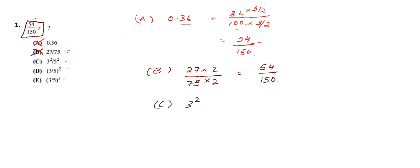In option C we have 3 squared divided by 5 squared, which is 9 by 25. To convert 25 to 150 we multiply by 6. So multiplying both numerator and denominator by 6: 9 times 6 gives 54, and 25 times 6 gives 150. So the value again matches with our question. Hence option C is also not the correct answer.